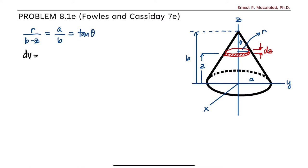So this volume element dv is equal to the area of this disk times the height dz. So this is pi r squared dz. So by ratio and proportion, r is equal to a over b times b minus z. So therefore, the volume element will now be equal to pi a squared over b squared times b minus z squared dz.